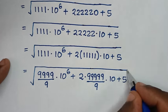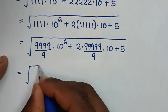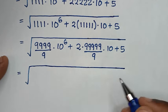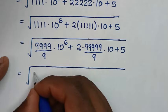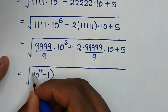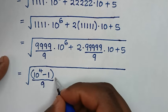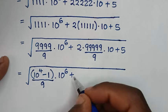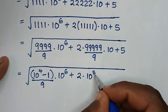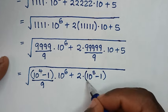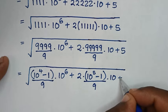Then times this 10, then plus this 5. Then in the next step, it will be equal to square root of — for this 9s, we make it to have base of 10 with power. So this 9s, they are 4. So it's same as 10 power of 4 minus 1, bracket. This is same as this here. Then over 9. Then times 10 power of 6, plus 2 times this 9s — they are 5 — so it's same as times 10 power of 5 minus 1, bracket. This here is same as this, then over 9, then times 10, plus 5.